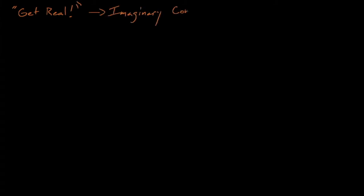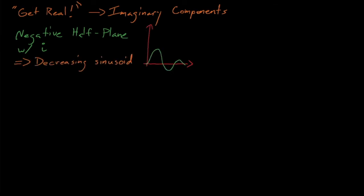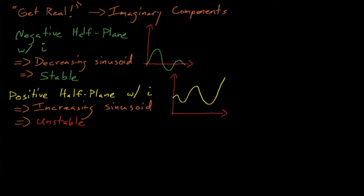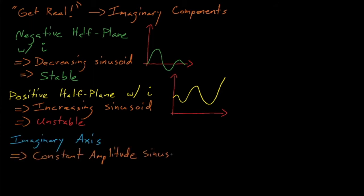Now, since we've been plotting our zeros in the complex plane, let's see what happens when our characteristic equation contains roots that have imaginary components. It turns out that this just means that our system will have sinusoidal behavior if it has imaginary components. A zero in the negative real half plane with an imaginary component represents a decreasing sinusoid, which is inherently stable. A zero in the positive real half plane that has an imaginary component represents an increasing sinusoid, which is thus unstable. And the zero on the imaginary axis, not at the origin, represents a constant amplitude sinusoid, which is stable because its amplitude does not grow over time.